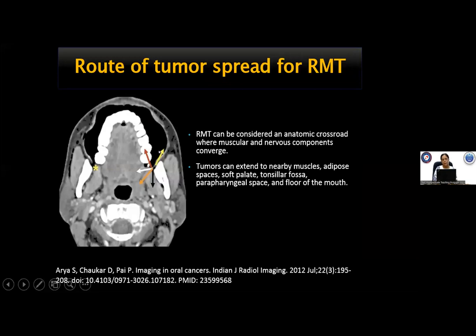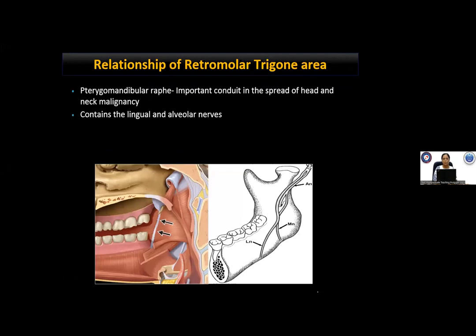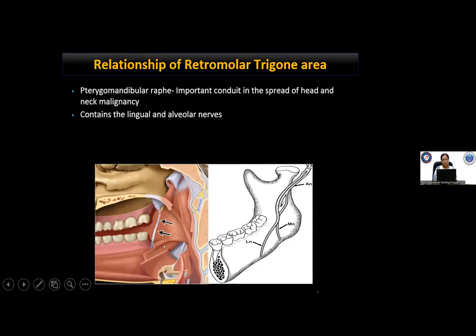From the retromolar trigone, the tumor can spread to the buccal mucosa, subcutaneous tissue to the skin, or medially to the medial pterygoid muscle, the parapharyngeal fat, to the tonsil, or to the hard palate. The retromolar trigone area is formed by thin mucosa over the mandible, and just beneath that lies the pterygomandibular raphe — a fibrous condensation of buccopharyngeal fascia extending from the hamulus of the medial pterygoid plate to the mylohyoid ridge on the mandible. This pterygomandibular raphe is an important conduit in the spread of head and neck malignancies.